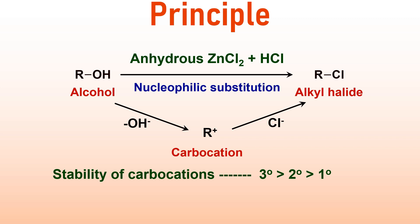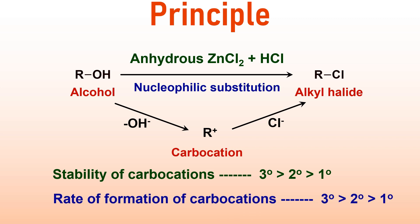Since the stability of carbocation decreases from tertiary to secondary to primary, the rate of the reaction also reflects the same order. That is why tertiary alcohols react faster, followed by secondary alcohols, and followed by primary alcohols. In the case of primary alcohols, the formation of carbocation is very slow, so that we have to heat the reaction mixture.